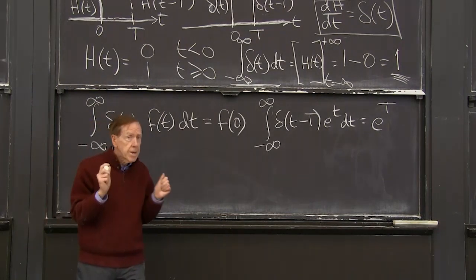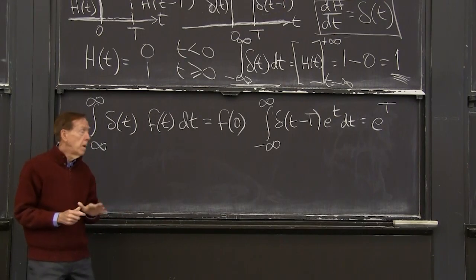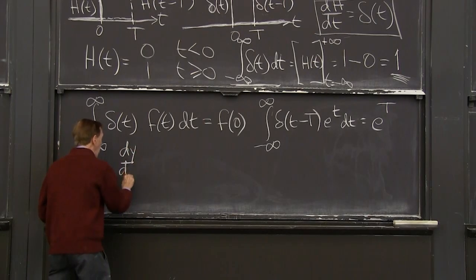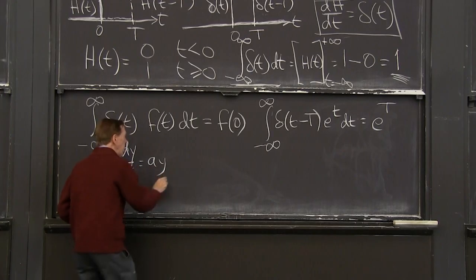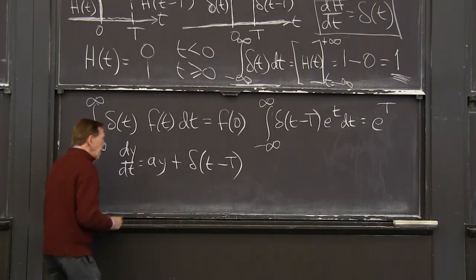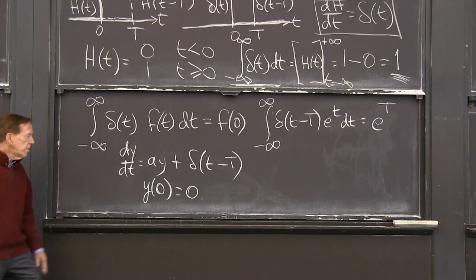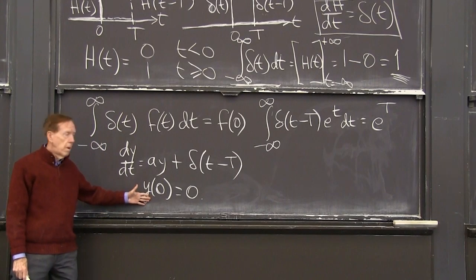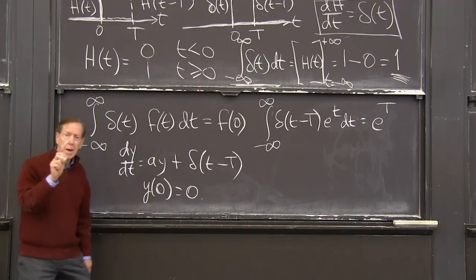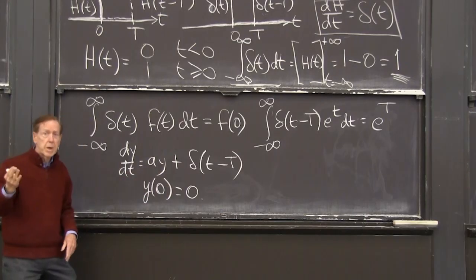So now let me use the delta function as the source term in our differential equation. So we're seeing one last time, one more. I still call it a nice function, even though it's not legitimately a function at all, the delta. But let me solve the equation dy dt equal ay plus the delta function turned on at capital T. And let me start it from 0. So I don't make any initial deposit to my account.